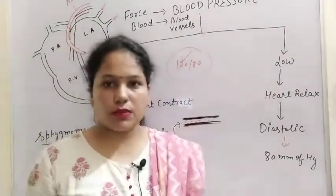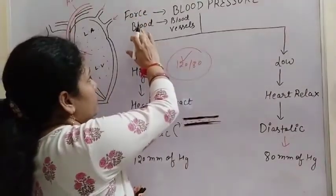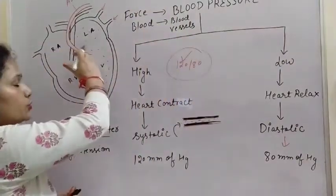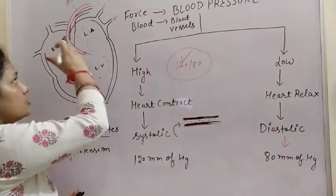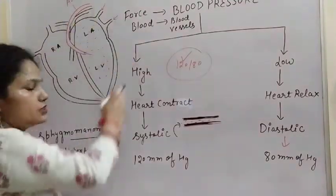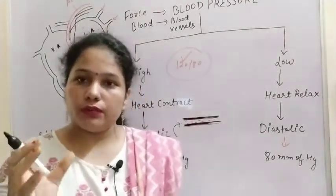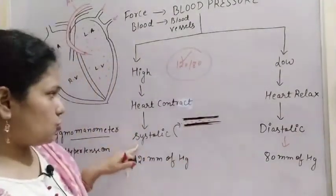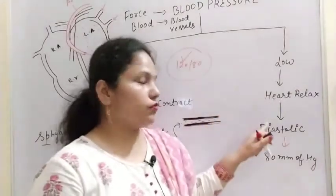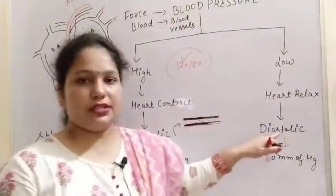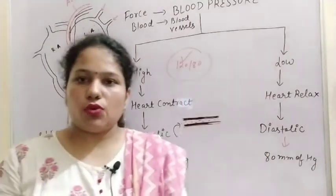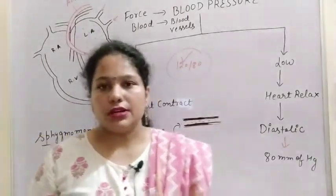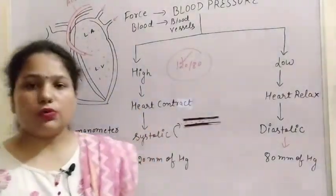So I think you understood what is blood pressure — the force exerted by blood on blood vessels, and especially the arteries, because blood pressure in the arteries is high. Blood is supplied to the various parts, because when the contraction of the ventricle takes place, that is the systolic pressure. And when the relaxation of the ventricle takes place, that is the diastolic pressure. So you can better understand what is systolic pressure and what is diastolic pressure. That is about blood pressure.